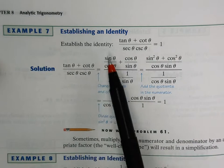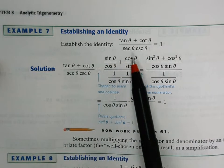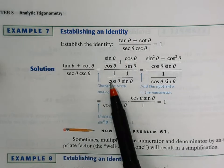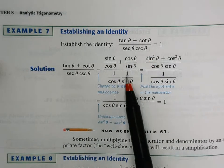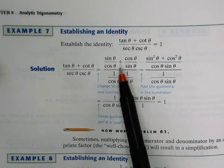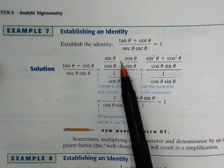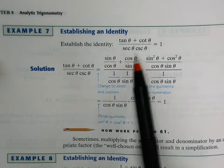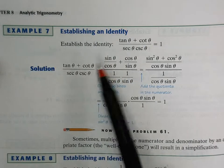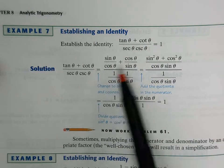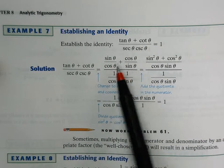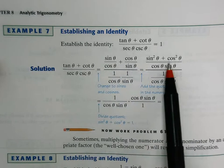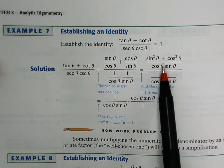You see that tangent is sine over cosine, cotangent is cosine over sine, secant is one over cosine, and cosecant is one over sine. Any time you have addition or subtraction, think fraction plus a fraction or fraction minus a fraction — get yourself a common denominator. The common denominator is a factor of cosine times a factor of sine.